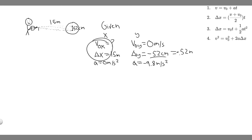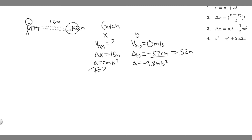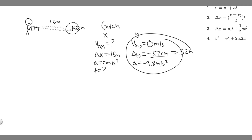We want to find v₀x. To do that, we need another variable — specifically time. We can't directly find the final velocity, but we can use the y-direction variables (v₀y, Δy, and ay) to solve for time, since time is the same for both x and y. Once we have time, we can plug it in and solve for v₀x.